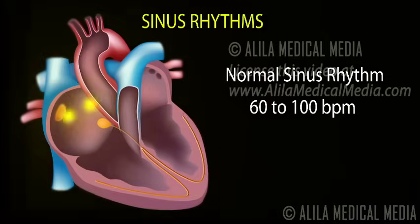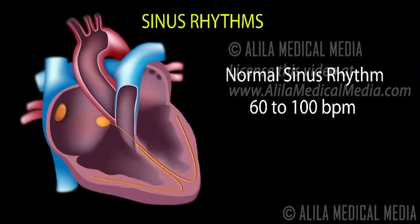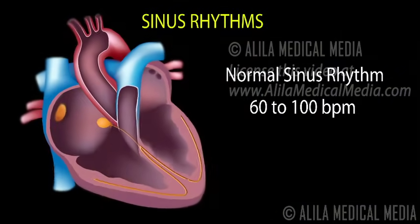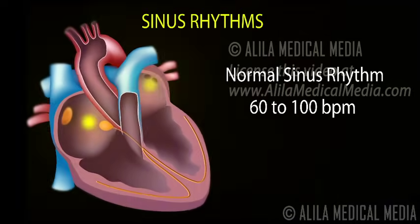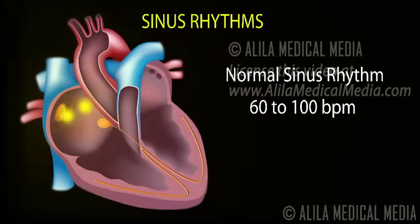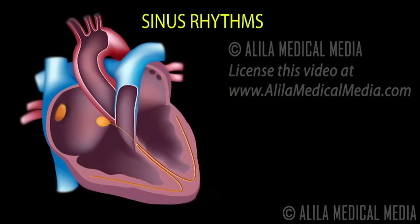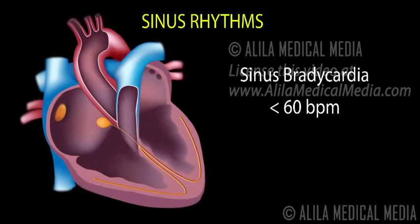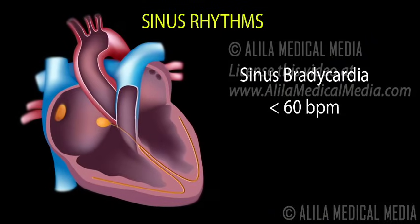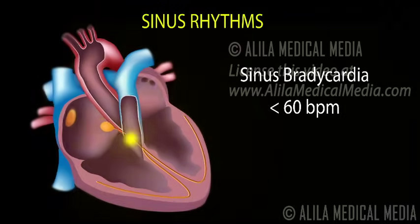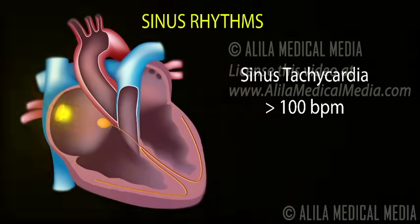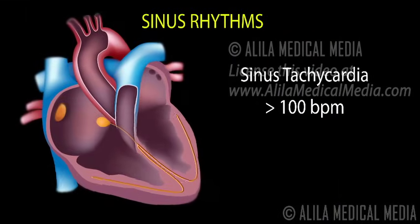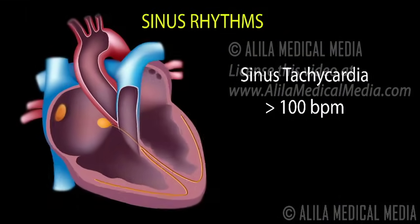Sinus rhythm is the normal rhythm of the heart set by its natural pacemaker in the SA node. In a healthy heart, the SA node fires 60 to 100 times per minute, resulting in the normal heart rate of 60 to 100 beats per minute. The most common variations include sinus bradycardia, when the SA node fires less than 60 times per minute, and sinus tachycardia, when the SA node fires more than 100 times per minute generating a faster heart rate of greater than 100 beats per minute.